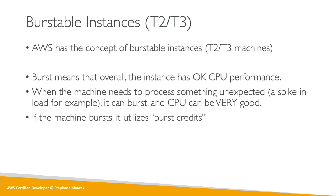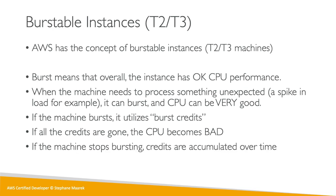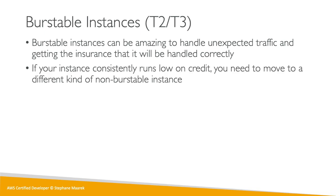As you can expect, if the credits are all gone, then the CPU becomes bad — terrible. And then when the load is over and the CPU stops bursting, you gain back the credits over time. Burstable instances are good — they accumulate credits, and when you need them most for an unexpected load, they're amazing. But if you abuse that, you lose all the capacity. If you're running low on credits all the time, you probably shouldn't use T2 or T3 — use a C or M type instance instead.